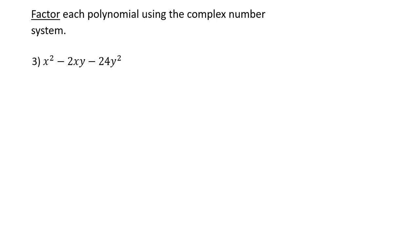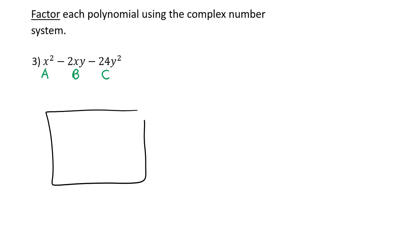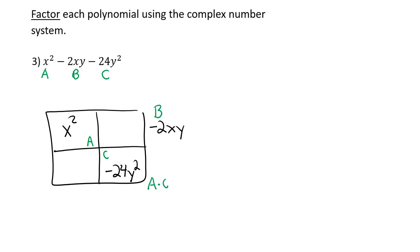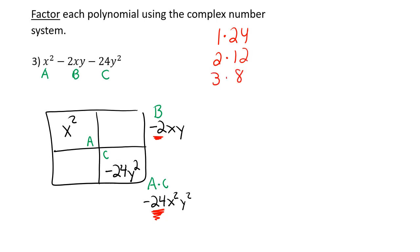Problem 3 is similar — they just put two variables in to try to throw you off, but it's the same thing: three terms, A, B, and C. Fill in the box. A times C: x-squared times 24y-squared gives negative 24x-squared y-squared. I need two numbers that multiply to be negative 24 and add or subtract to make negative 2. Factors of 24 are: 1×24, 2×12, 3×8, and 4×6.